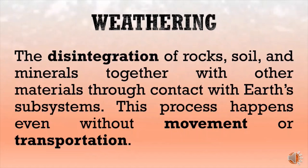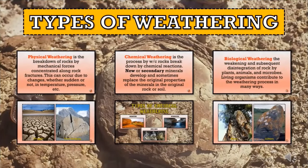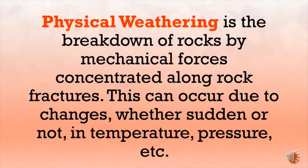The first exogenic process is weathering — the disintegration of rocks, soil, and minerals through contact with Earth's subsystems. This happens even without movement or transportation; it is the breaking down of rock and soil in situ, or on the spot. There are three types: physical, biological, and chemical weathering. Physical or mechanical weathering is the breakdown of rocks by mechanical forces along rock fractures, occurring due to changes in temperature, pressure, etc. For example, soil cracks because of extreme heat or drought, and water, wind, and ice may abrade or scrape rocks or soil.